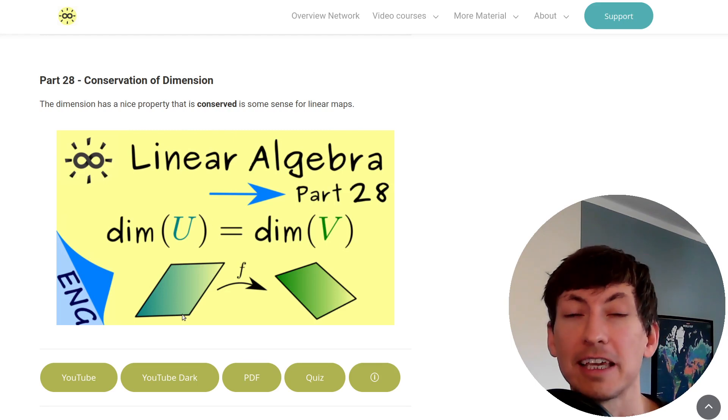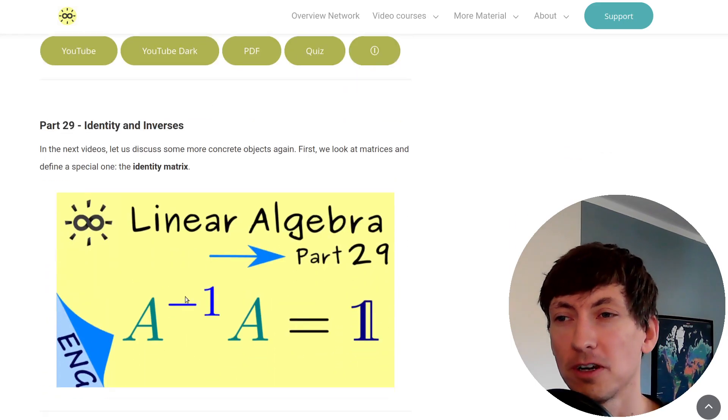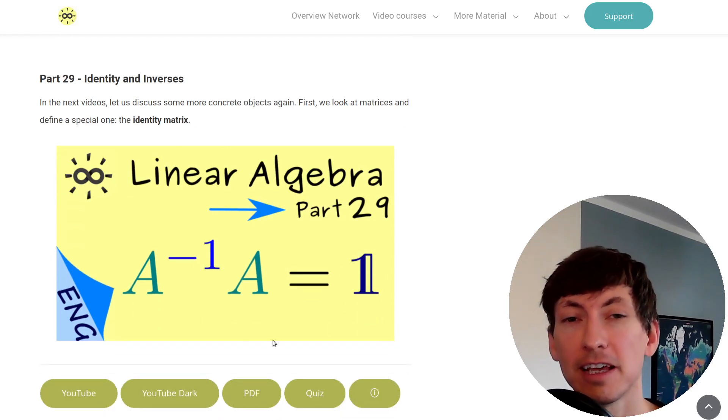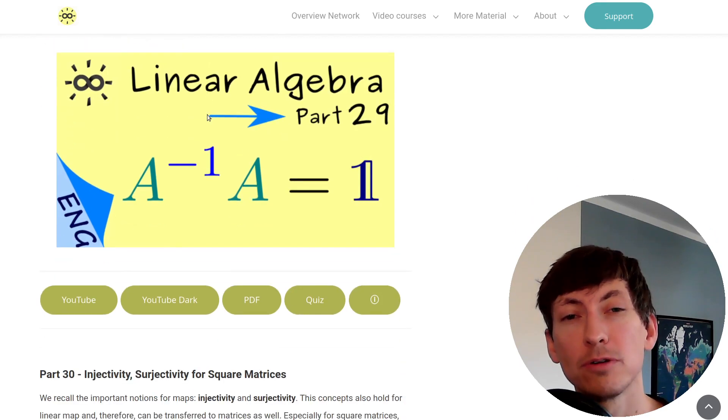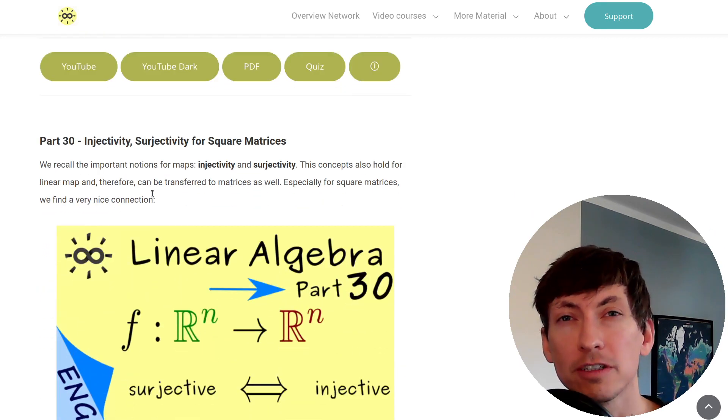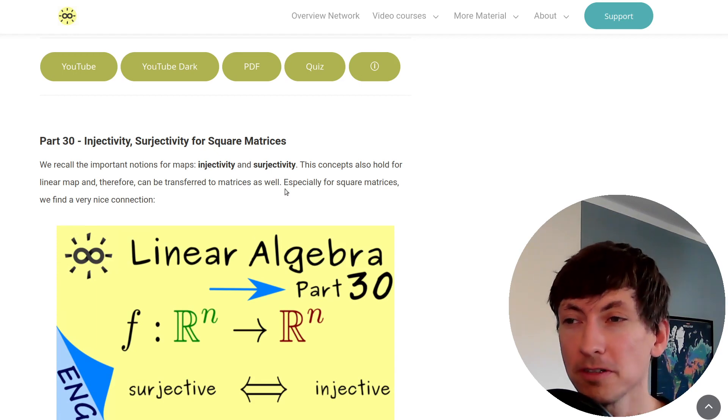The next videos get easier again because we go back to the matrices. For example, now we talk about the identity matrix and inverses of a given matrix. In particular we will see that not every matrix is invertible, and this is an important fact because we want to solve systems of linear equations. Having an inverse means we have a unique solution. In order to make this claim more precise we have to look at the properties injectivity and surjectivity for square matrices. We have already learned square matrices are completely related to linear maps from Rn into Rn. Now maybe a surprising fact is that surjectivity and injectivity mean exactly the same thing in this case.